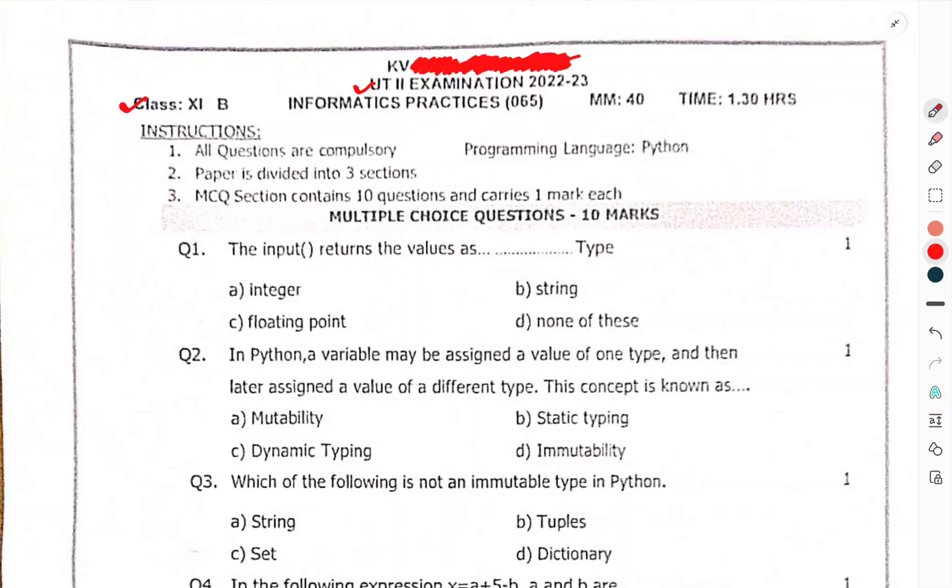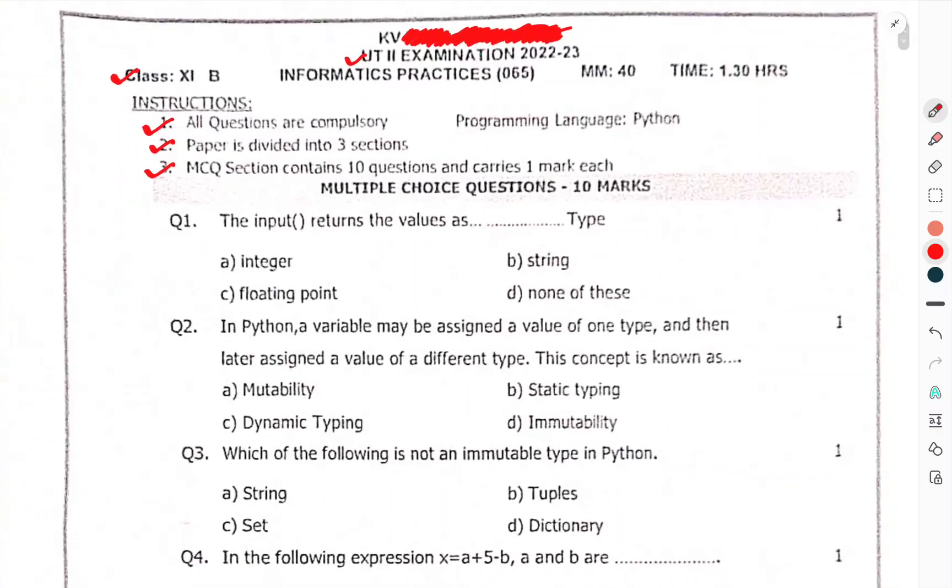Subject IP. First of all, General Instructions: All questions are compulsory. Programming Language: Python. Paper is divided into 3 sections: MCQ sections, conventional questions carries 1 mark each, multiple choice questions 10 marks.